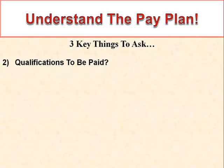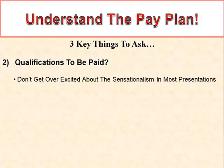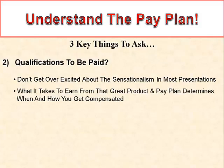Number two: qualifications to be paid. This may be the foremost of the three, because a lot of people will go watch a presentation, get excited — it's called sensationalism. You want that in a presentation; you want a certain level of respectable hype, but not misleading or misguided. The way you come off your excitement and focus on the real deal is finding out what the qualifications are to be paid with all that money you saw in the presentation. What it takes to earn from a great product and pay plan determines when and how you get compensated.